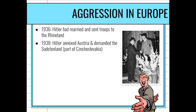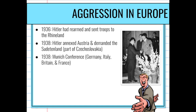By 1938 he starts to move his troops and claim land. He annexes the country of Austria — just claims it as his — and demands the area of the Sudetenland, which was part of Czechoslovakia. He's saying he's reclaiming territory taken from Germany after World War I, and he wants back what was taken from him and his nation.